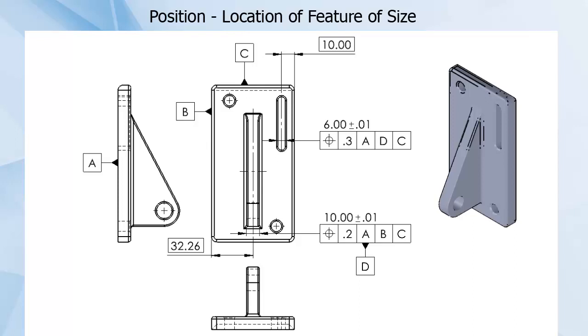The callout also tells the manufacturer and inspector that for this measurement the part should be held or stabilized first by datum A, the back or bottom of the part, and then by B, and then by C.